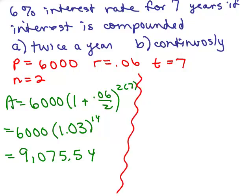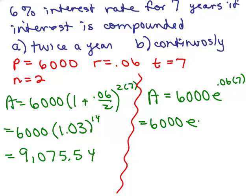So, we're going to have A equals 6,000, E to the RT, so .06 times seven. So, we have 6,000, E to the .42, because .06 times 7 is .42. And remember, we're going to have to do E to the .42 first, and then multiply it by 6,000.